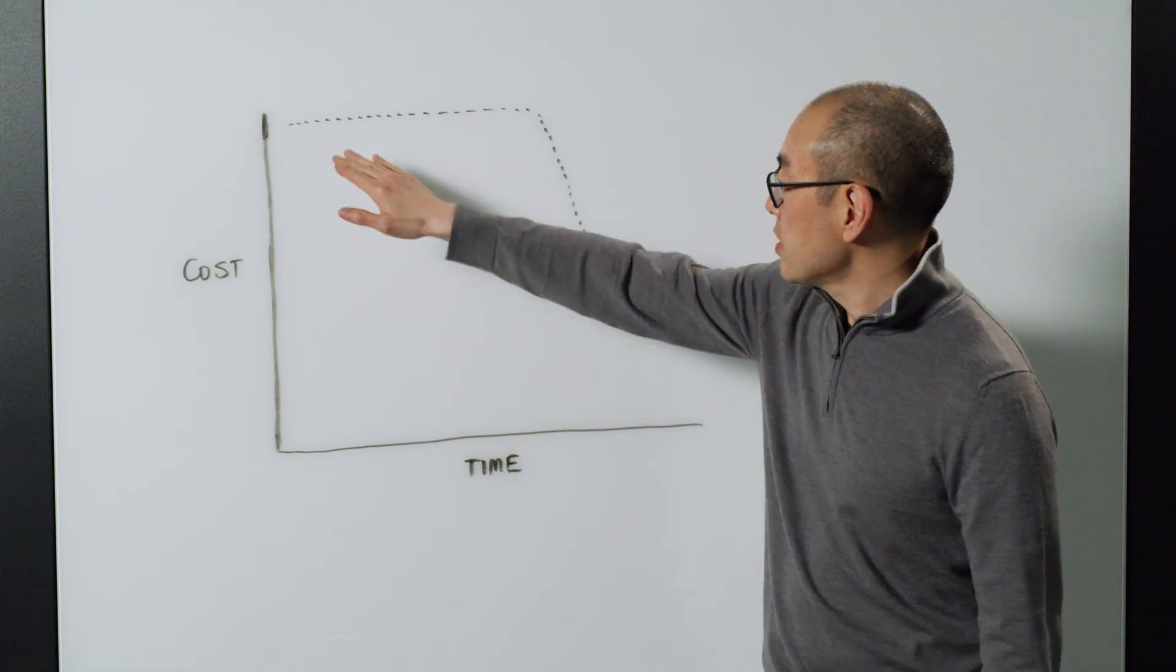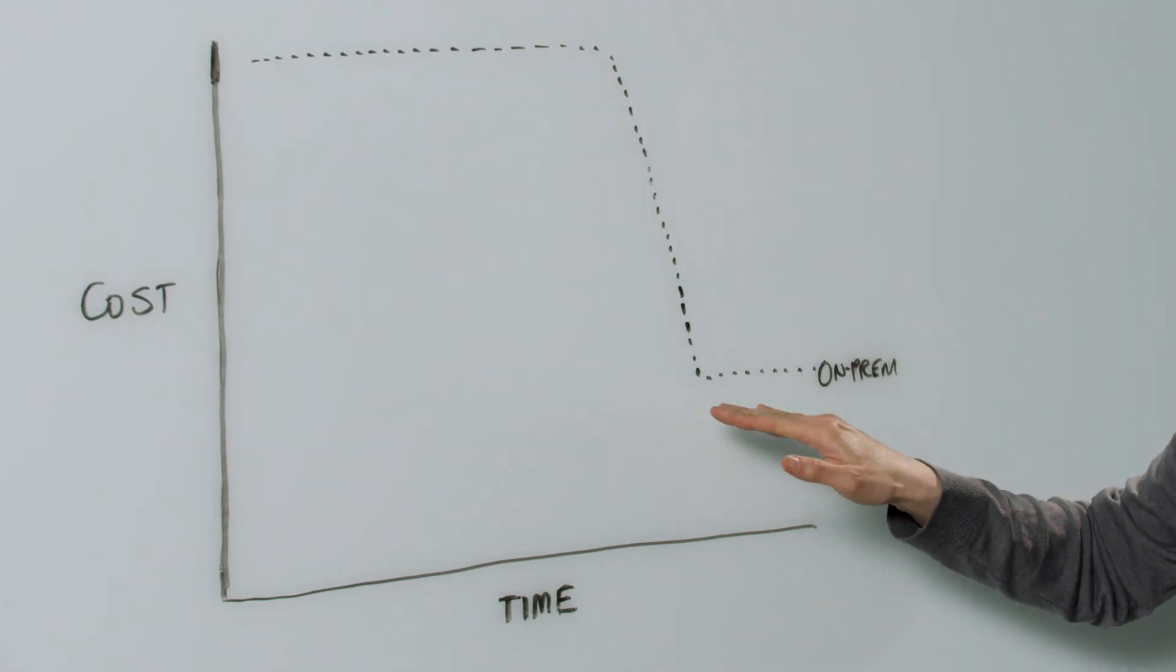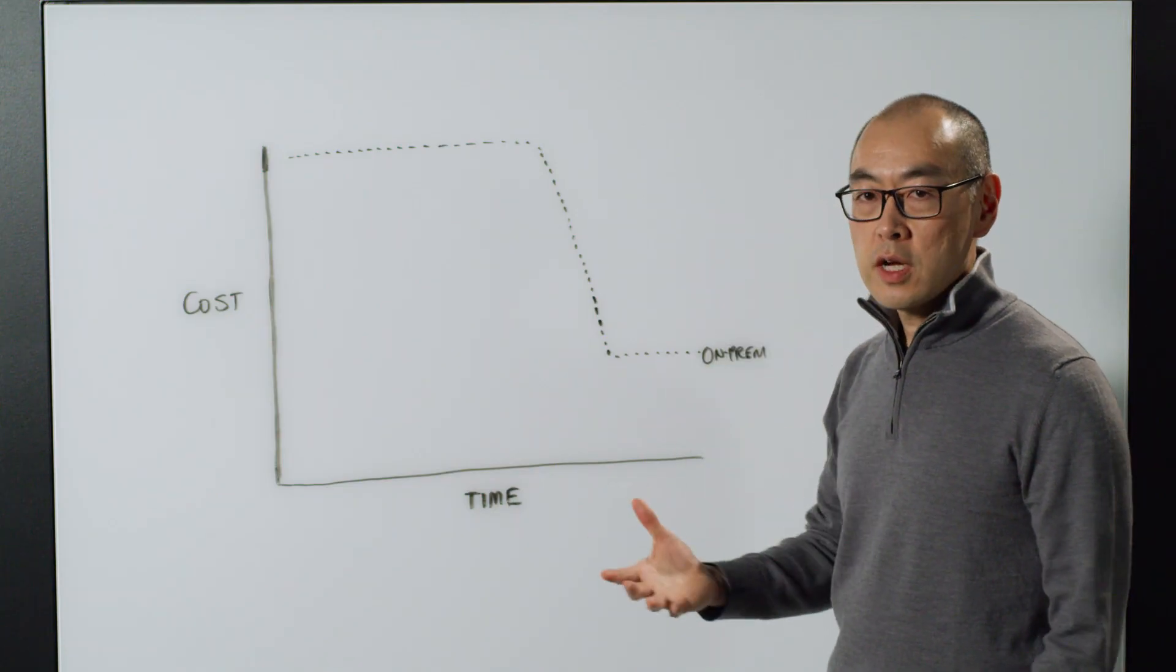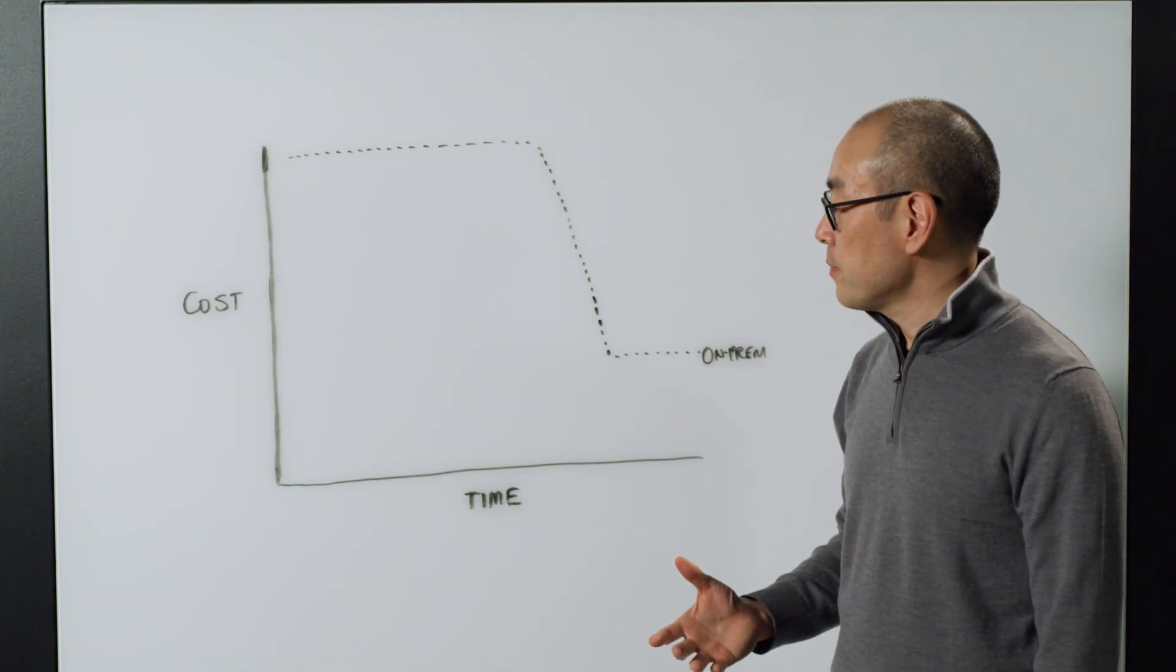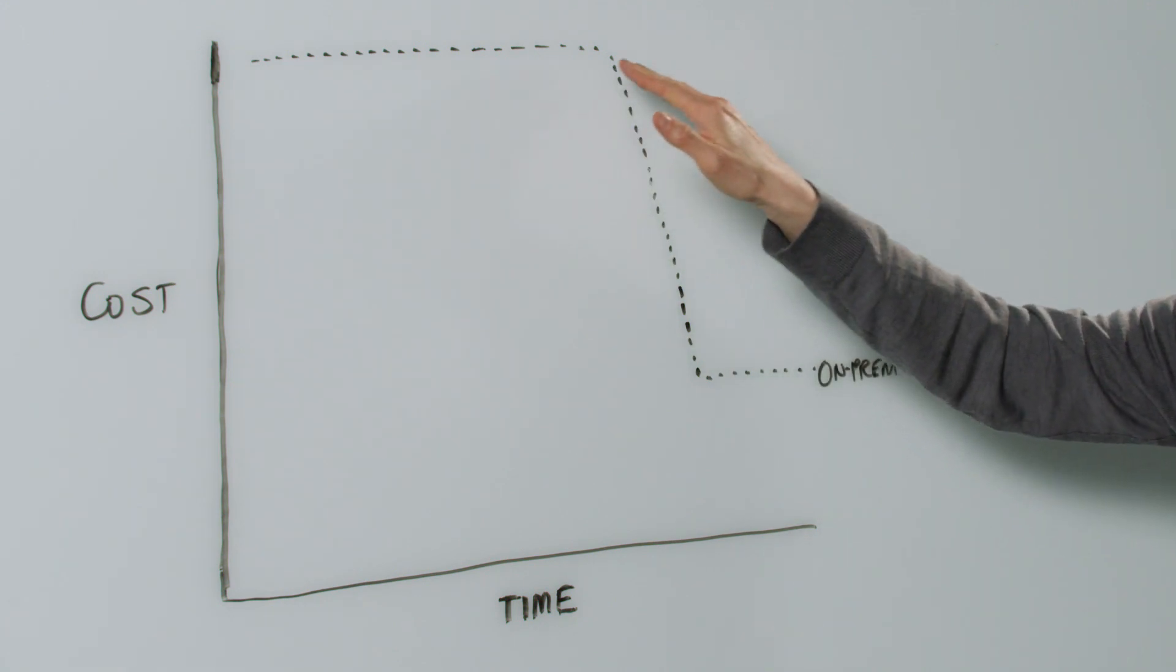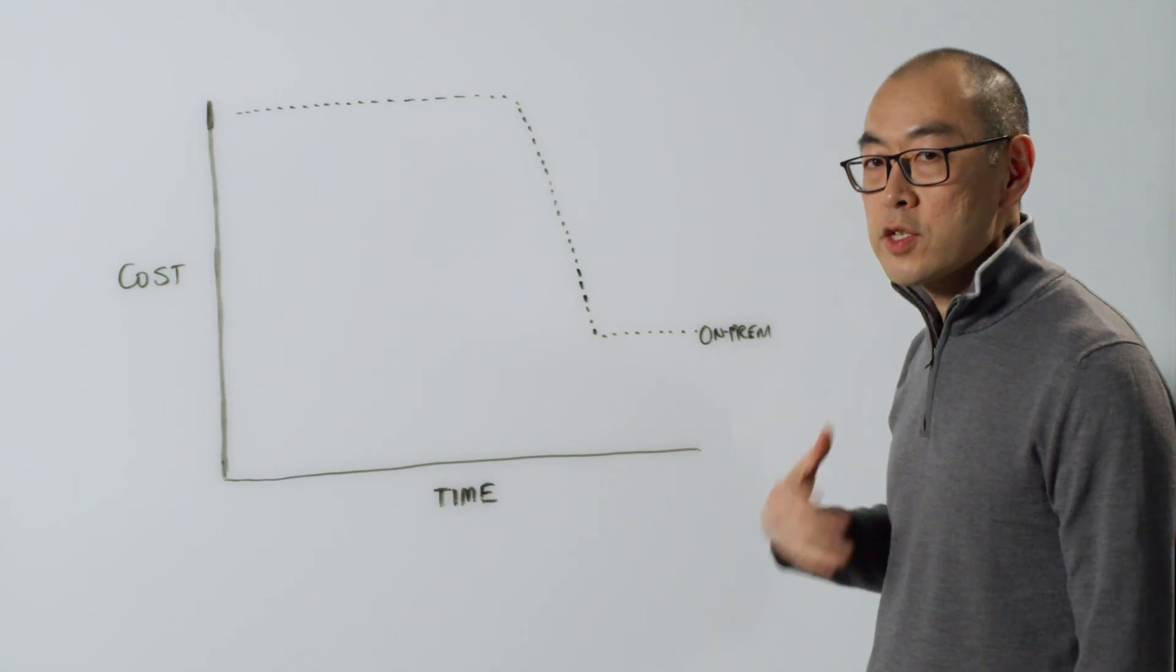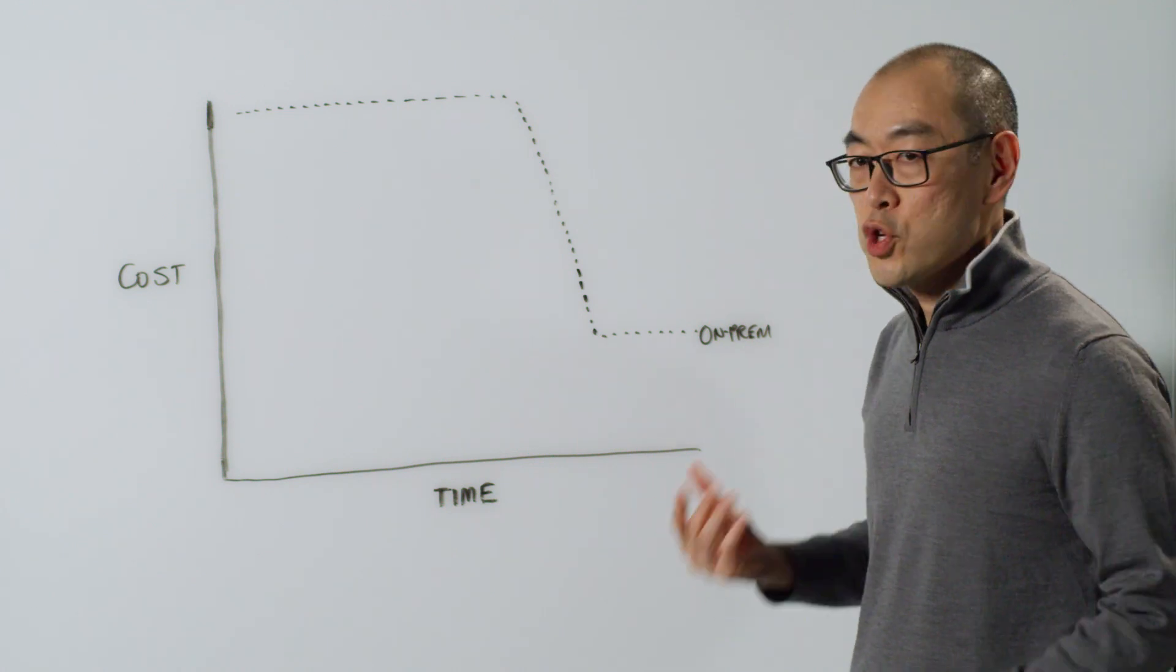This dotted line is your classic on-prem infrastructure acquisition curve, where you purchase a certain amount of hardware infrastructure, it depreciates over time, and then your costs go down to basically just the operating costs. You depreciated the asset.